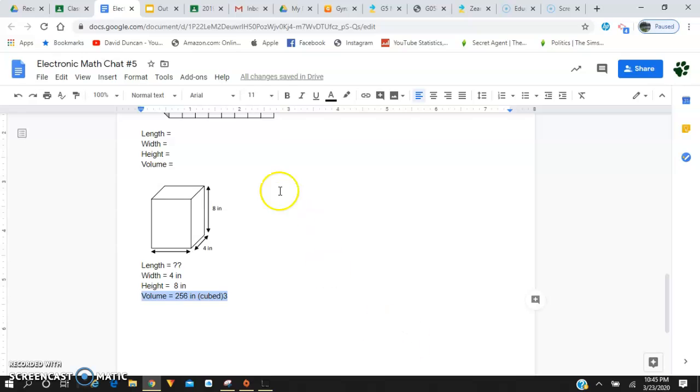We know, again, that formula of volume equals length times width times height is 256. But I don't have my length. But I can find out what my length is given the information that I have in front of me.